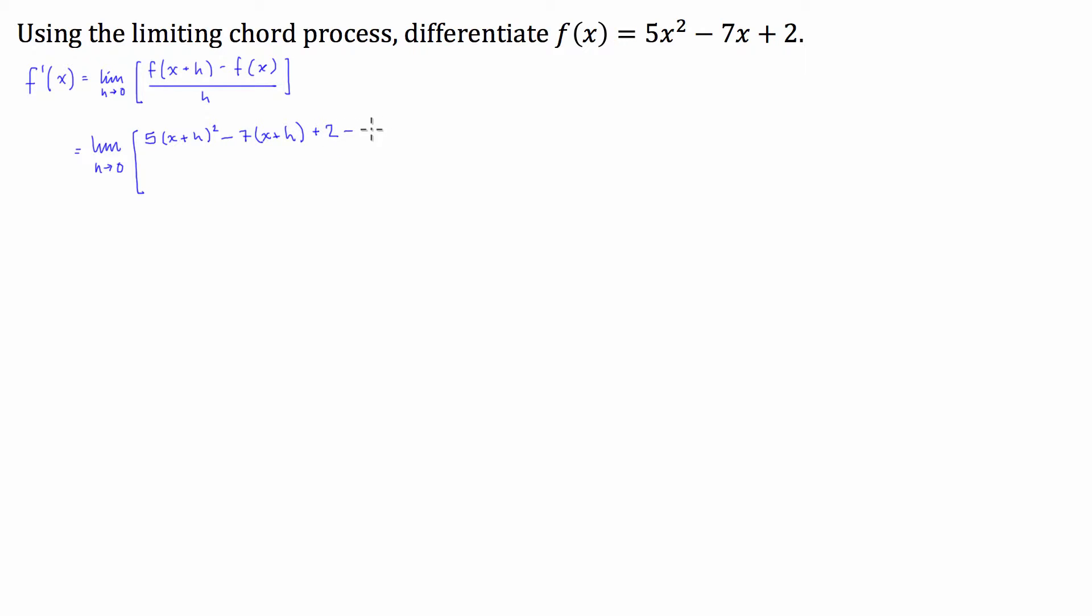And then we're going to subtract the function. Now I usually put this in a bracket just so I don't make a mistake with my negative signs later on. So the function is just 5x squared minus 7x plus 2. And that's all over h.